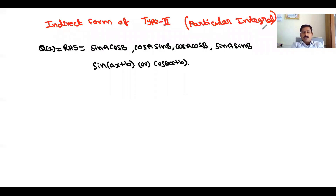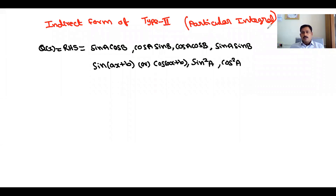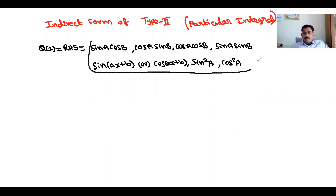In this video we are going to see about the indirect form of Type 2 particular integral. Your RHS or Q is in the form of sin or cos — that is Type 2. But in this indirect form, you will have your RHS as sinA cosB, cosA sinB, cosA cosB, sinA sinB, or sometimes sin(Ax+B), cos(Ax+B), sin²A, or cos²A. These forms are called the indirect form of particular integral Type 2.